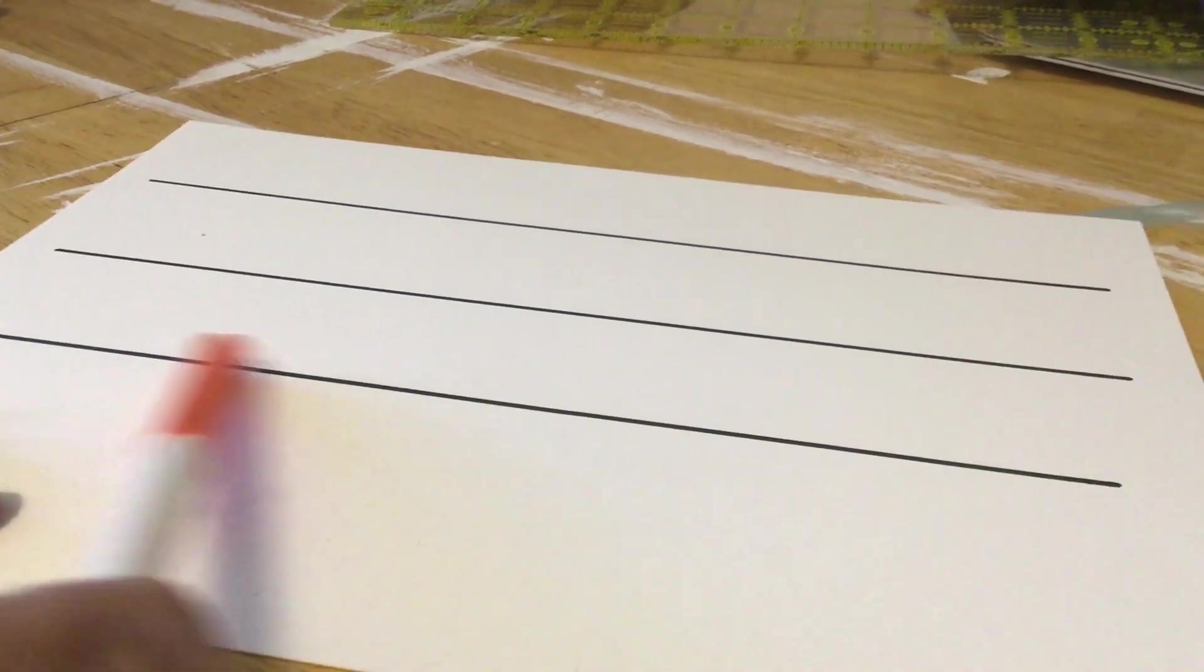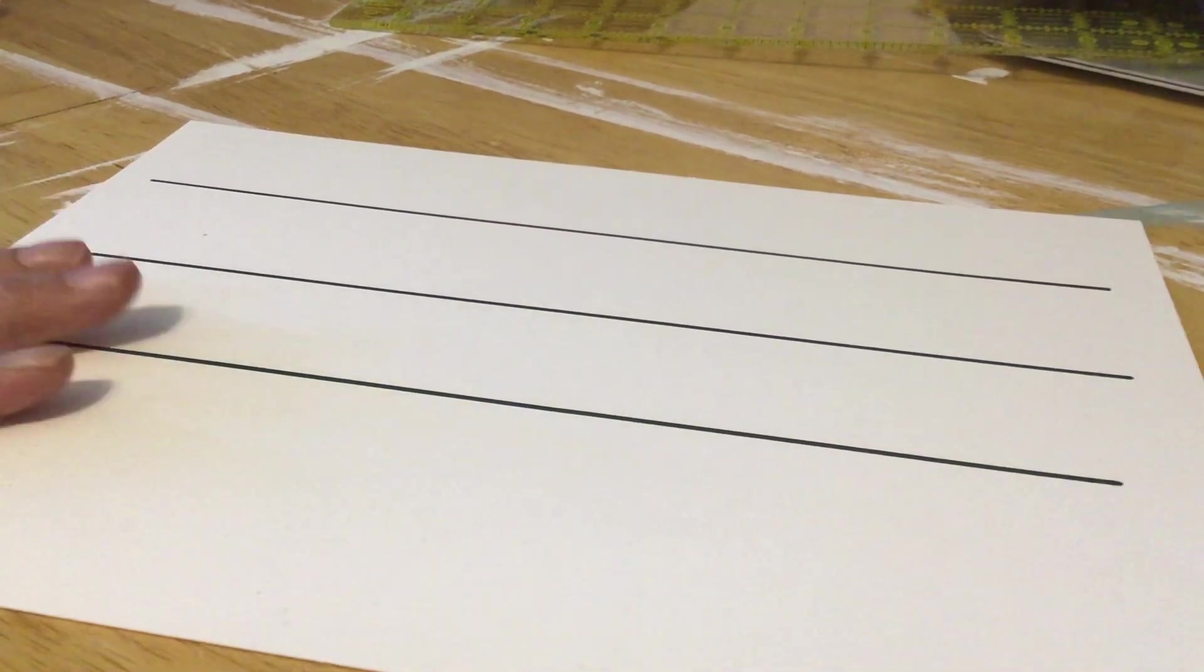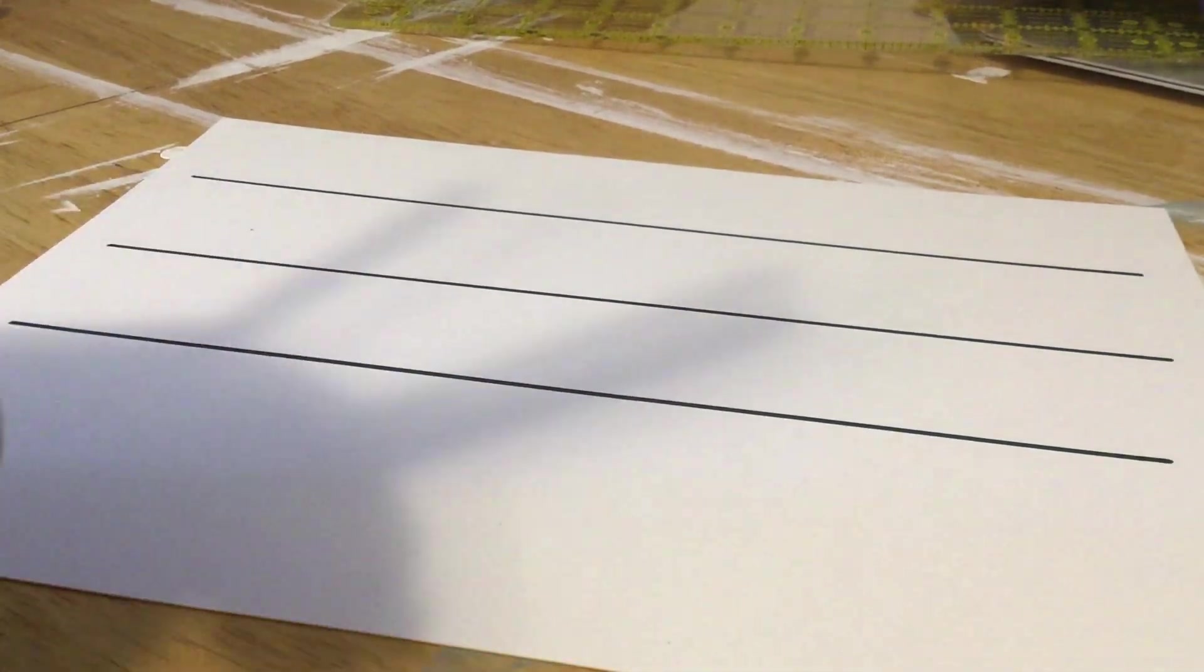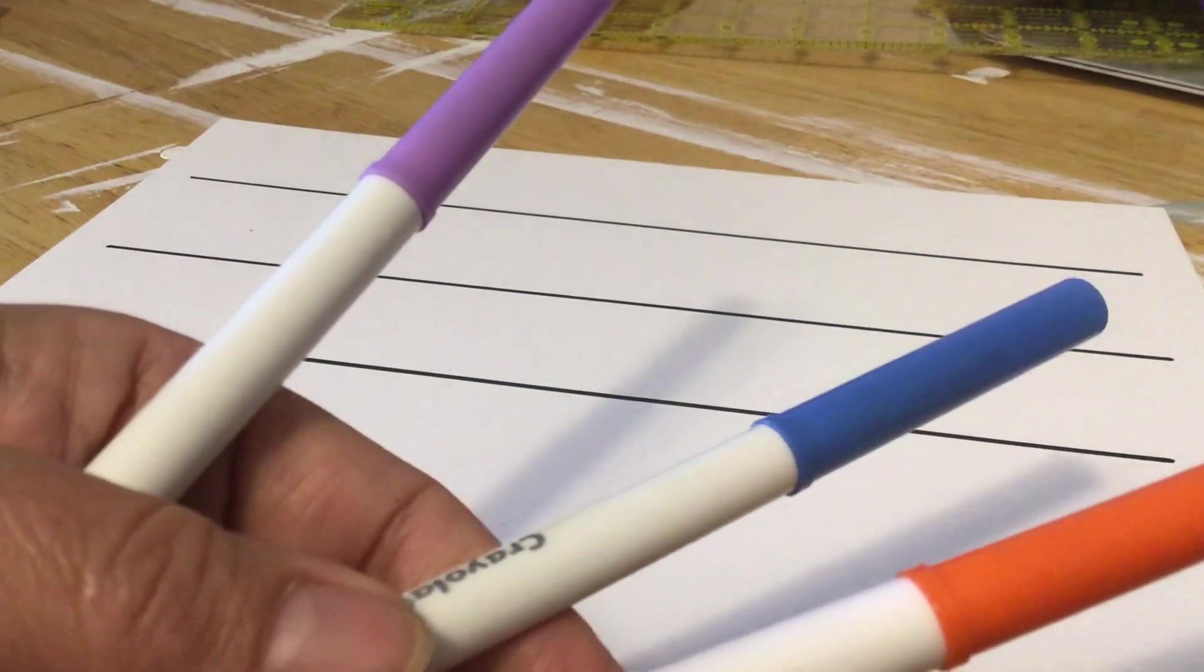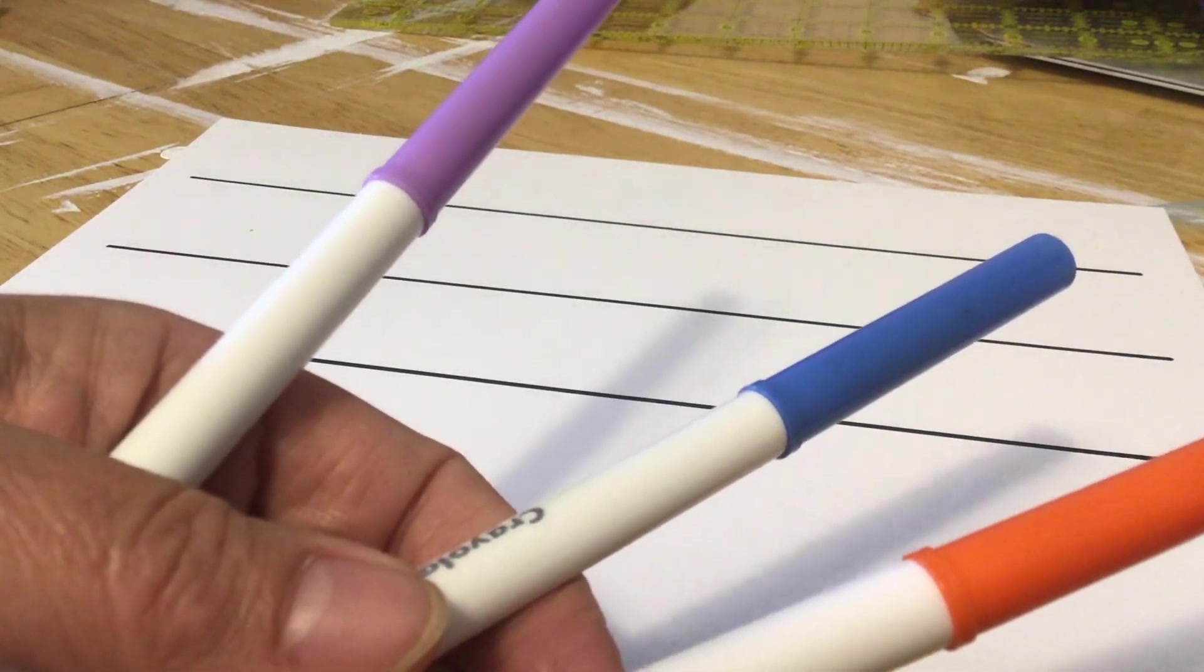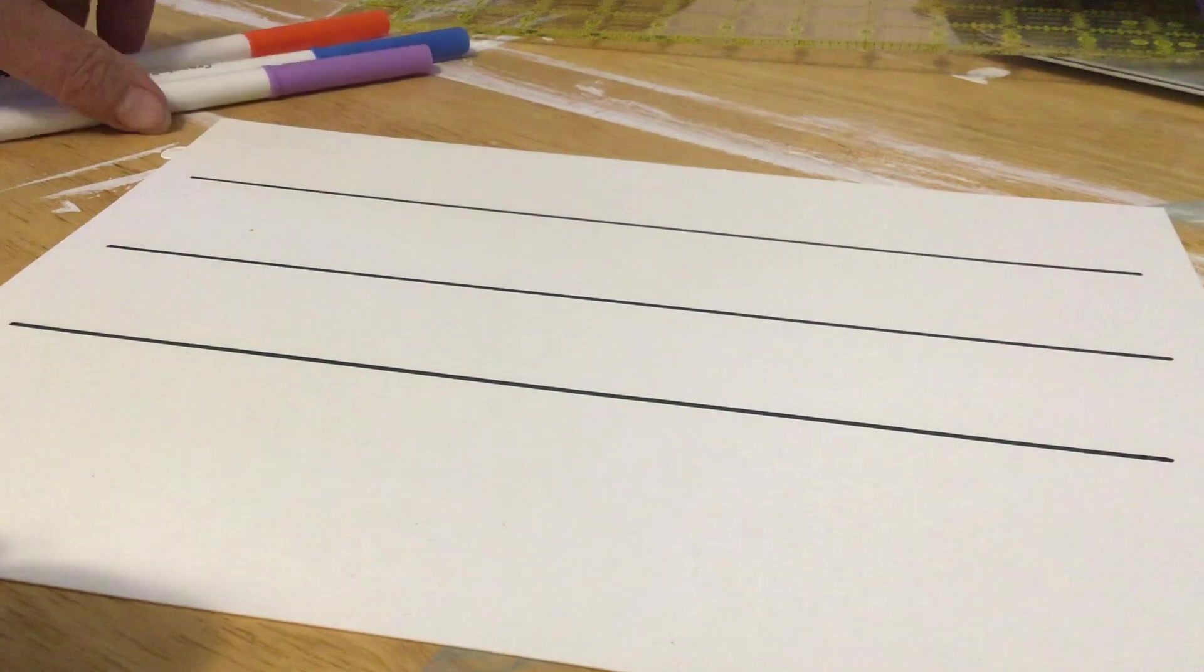And I used a ruler to make mine, so you might want to find a ruler too. You should have your piece of paper and three markers, different colors. You can be creative with that. If you want to do just one color, that's fine.